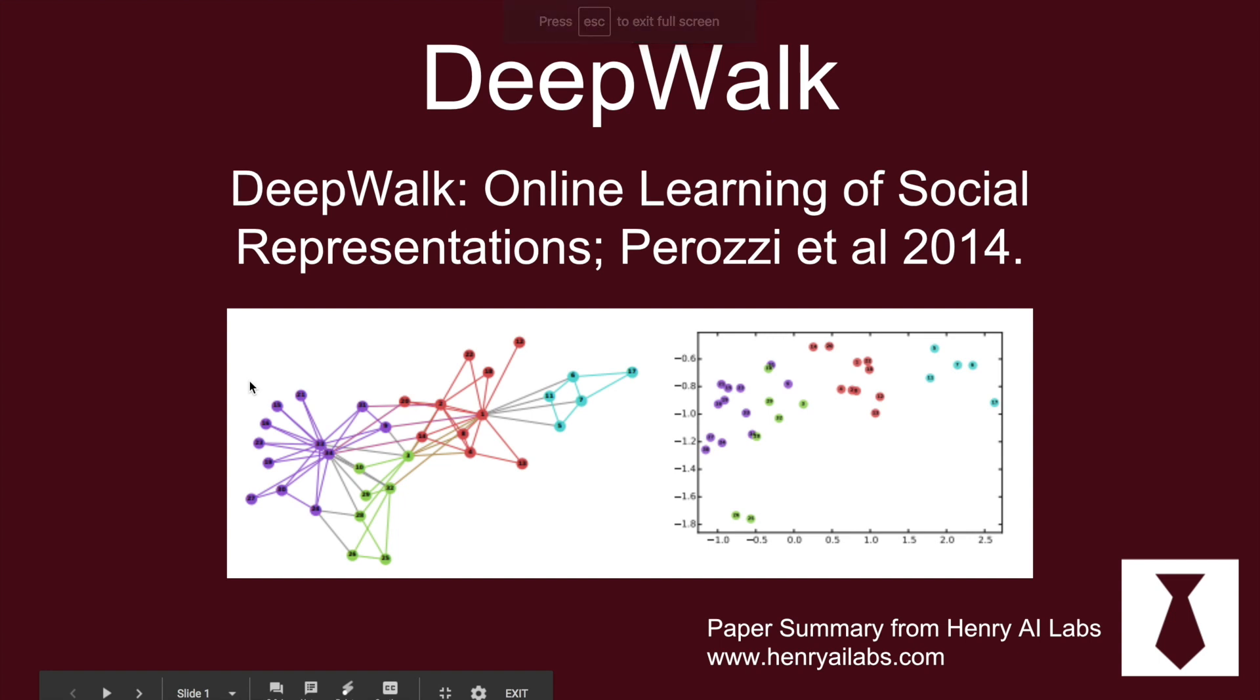Hi, welcome to Henry AI Labs. This video is going to cover DeepWalk. DeepWalk is a mechanism to encode social networks based on their connectivity and it was published in 2014.